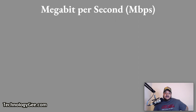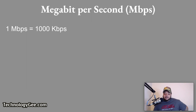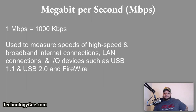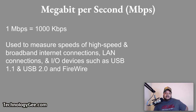One megabit per second equals 1,000 kilobits per second. Megabits per second is widely used to measure the speeds of high-speed broadband internet connections, LAN connections, and input/output devices such as USB 1.1, USB 2.0, and FireWire — topics covered later in this class.